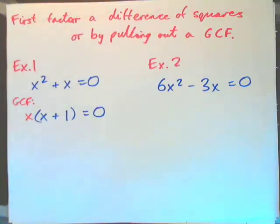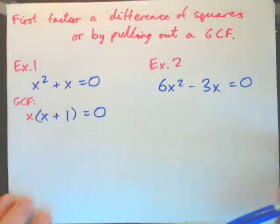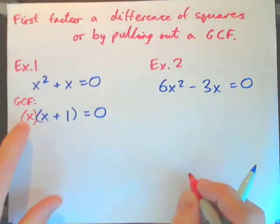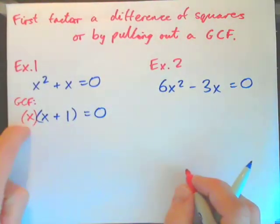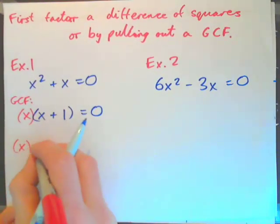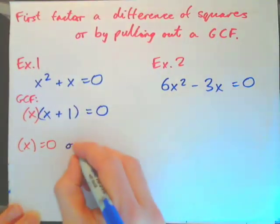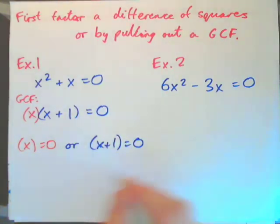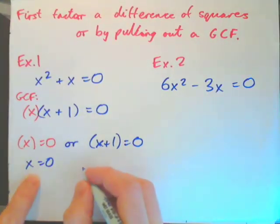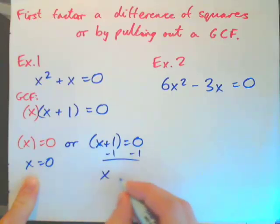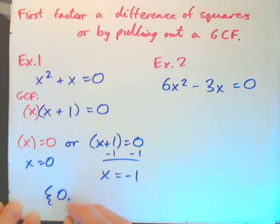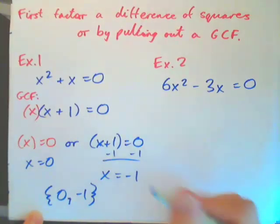So I have x times x plus 1 equals 0. Using the zero product rule, either x equals 0, or the x plus 1 factor equals 0. Solving both: x is 0, and subtracting 1 from both sides gives x as negative 1. So x is 0 or negative 1. The solution set is {0, −1}.